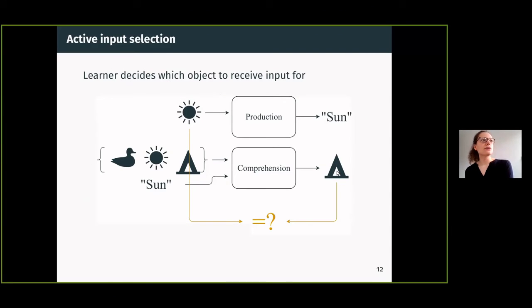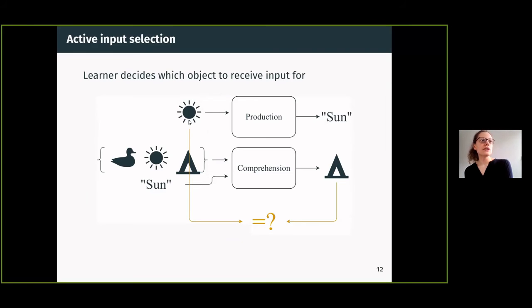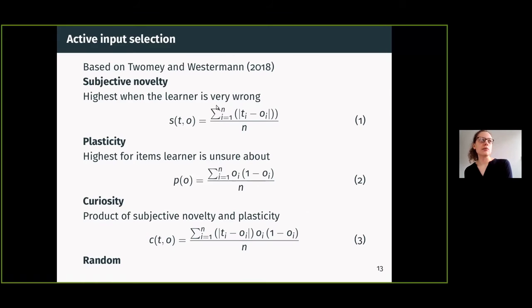One of the things we can do is we can look at the mismatch—basically just is this the same object here or not? That is what we call subjective novelty. If this mapping is very wrong, then subjective novelty will be very high. It's basically the average absolute difference between the output nodes.